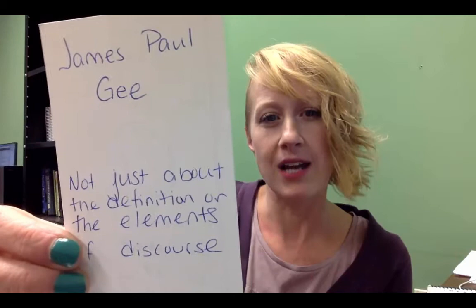One of the ways that I think about summarizing a text is first to identify what the key terms and key ideas are in the text. I use note cards, and I'm going to share those note cards with you throughout this. On one card I wrote that James Paul Gee is not just about the definition of the elements of discourse. And I asked myself: so what is it about if it's not just the elements of discourse?